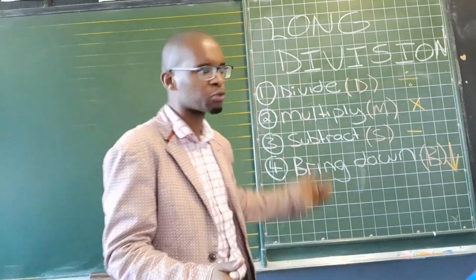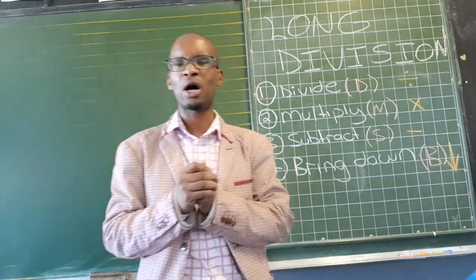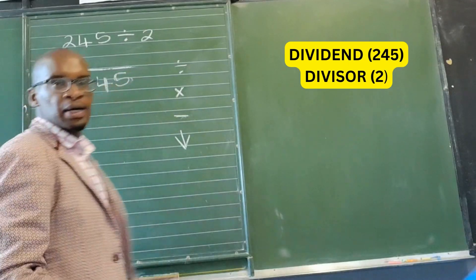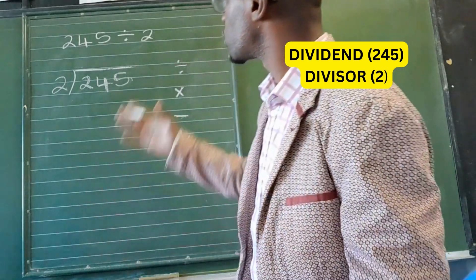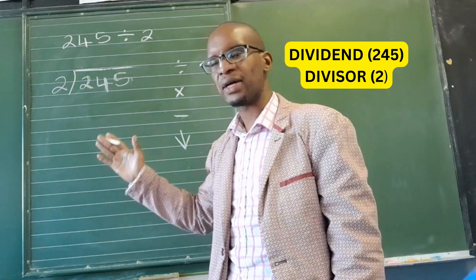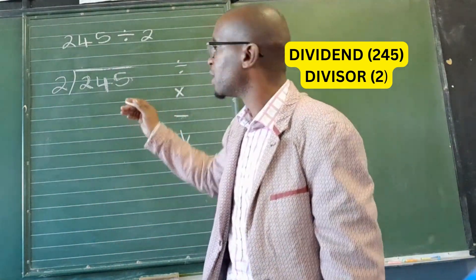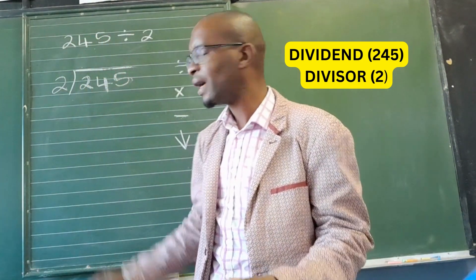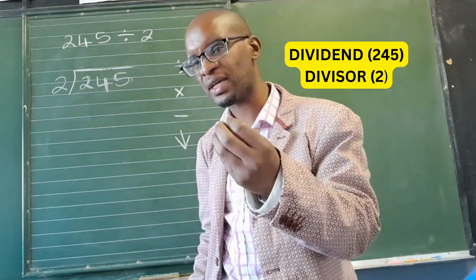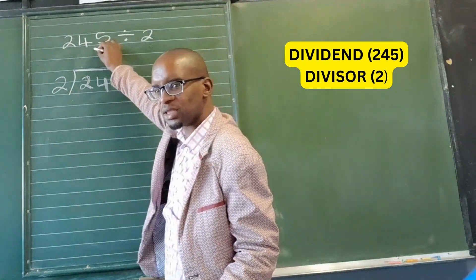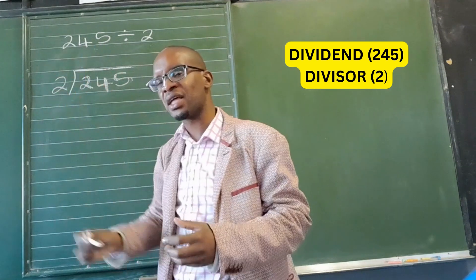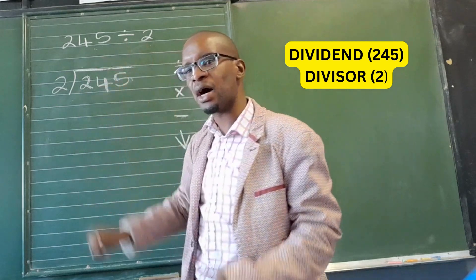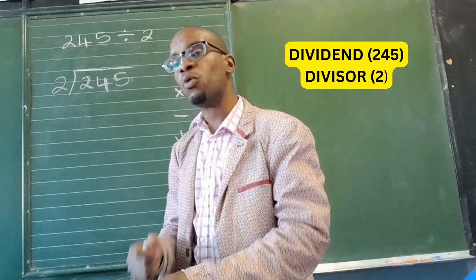Now let's take a look at the first example and see how we can apply this rule successfully to get our answers. In the first example we have 245 divided by 2. Now 245 is what we call our dividend, and the number 2 is what we call our divisor.